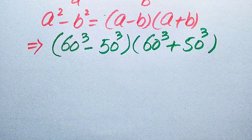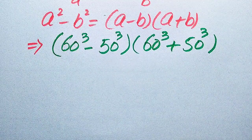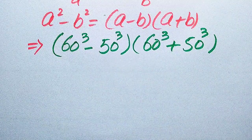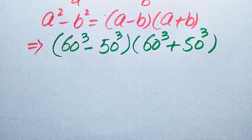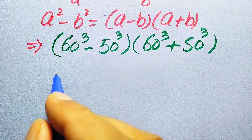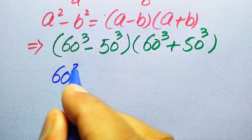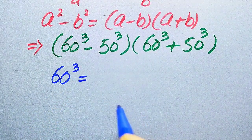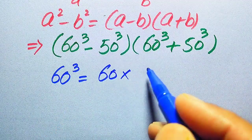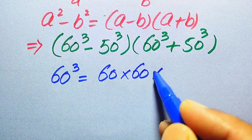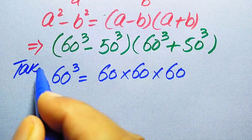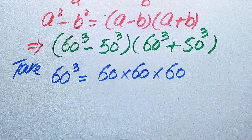In the next step, we need to find the cube of 50 and 60. This is our challenge because the calculator is not allowed, so we need to do all the working on paper. First, we will find the value of 60 cubed — 60 cubed means we multiply 60 three times.